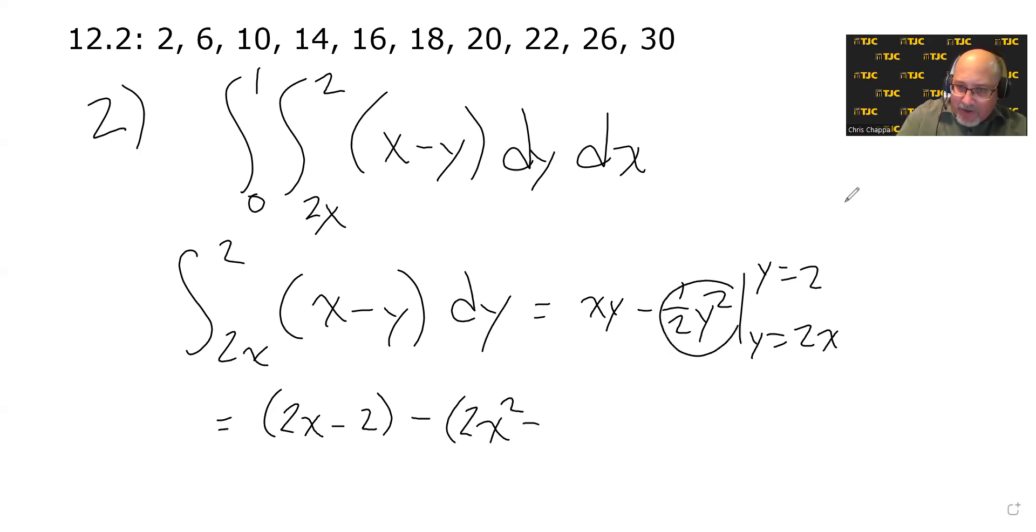And then the second part of it, the minus 1 half y squared, we got to proceed a little bit more cautiously. When we square 2x, we get 4x squared. And then half of 4x squared is 2x squared.